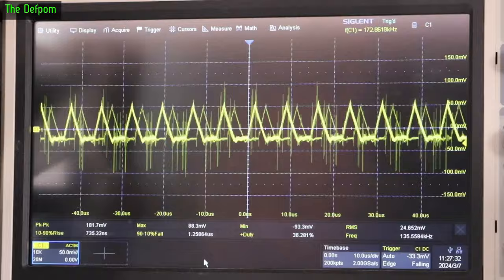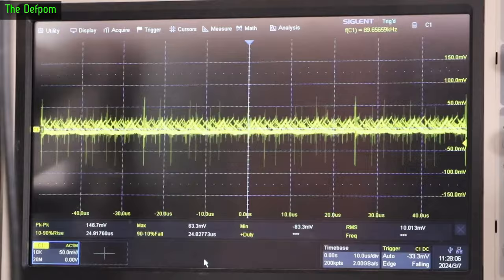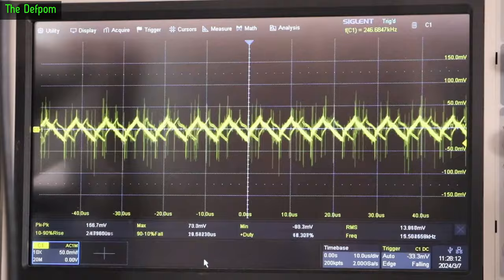220 microfarad. Let's whack this across the output and see what happens to this noise. That's 220 on there now. So I'm going to put the current back up. It's back to 1 amp. Yeah, I'll do 2 amps. Alright, 2 amps. That's with the capacitor on there.